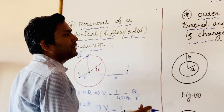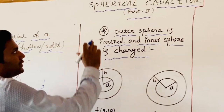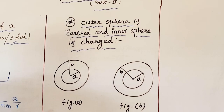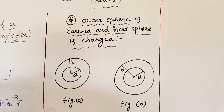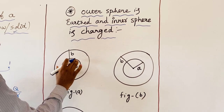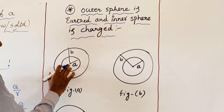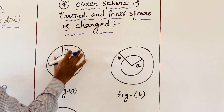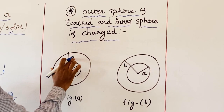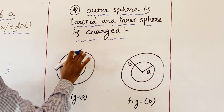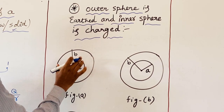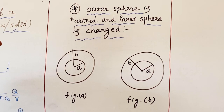Now we can see one more topic regarding the spherical capacitor. Already we know a spherical capacitor consists of two plates: one is a conductor — hollow or solid — that is the inner sphere with radius A, and the outer sphere, which must be hollow, with radius B. Inside the sphere of radius B, we place this hollow or solid sphere of radius A.